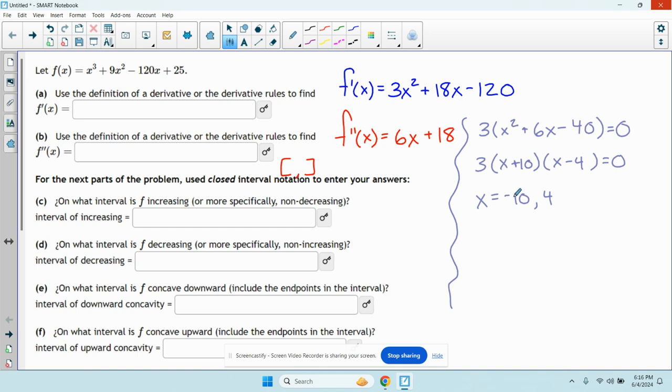So to figure out which one of these is a min or a max, or if they're neither at either one of these things, I'm going to draw a number line. So I have negative 10 and I have 4.